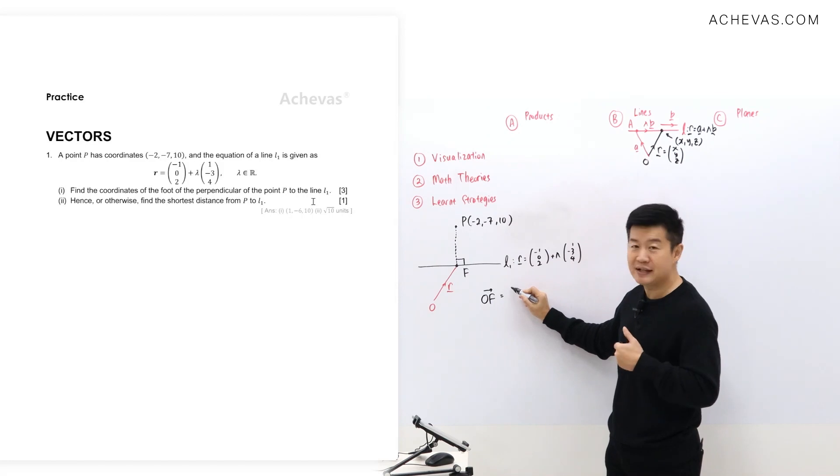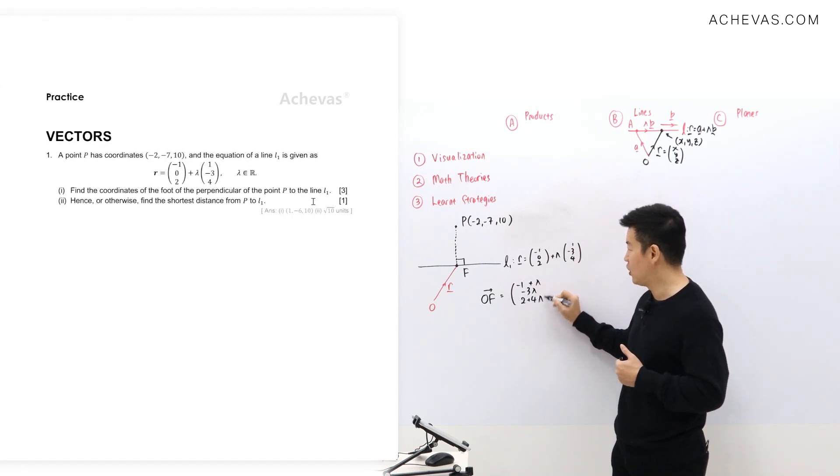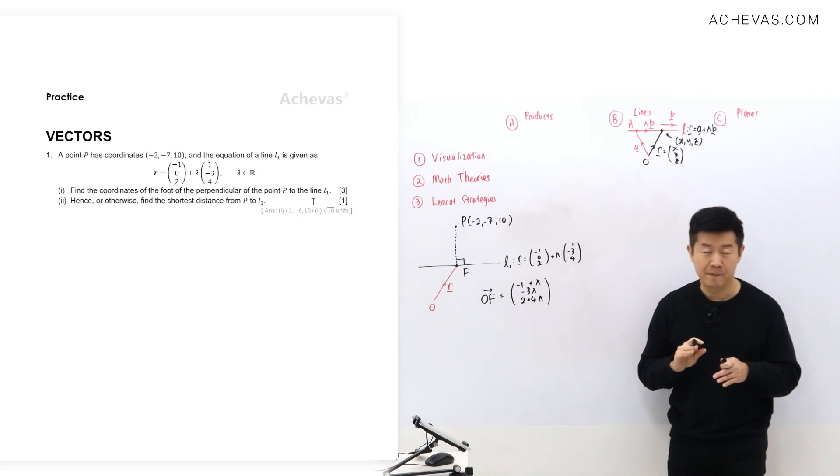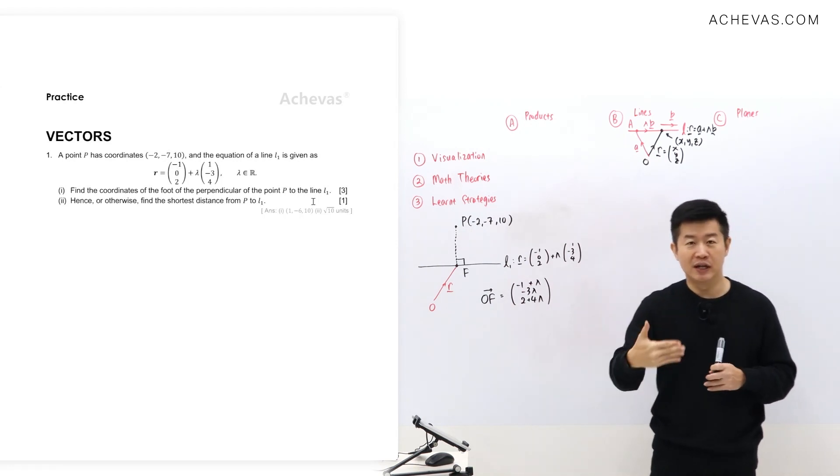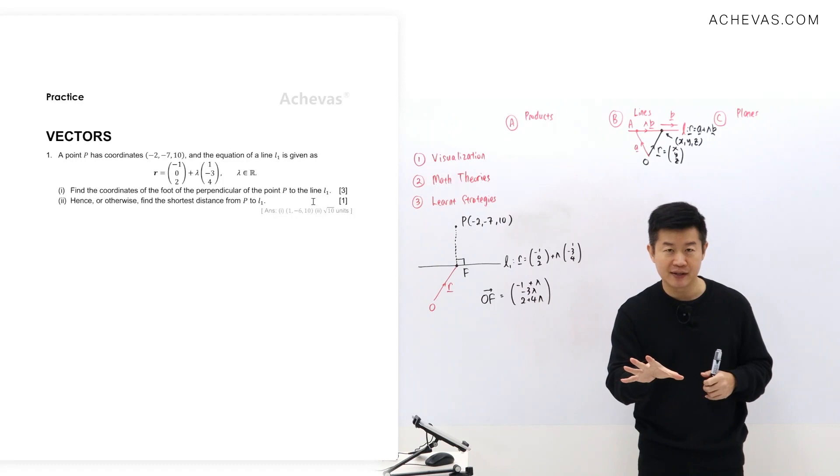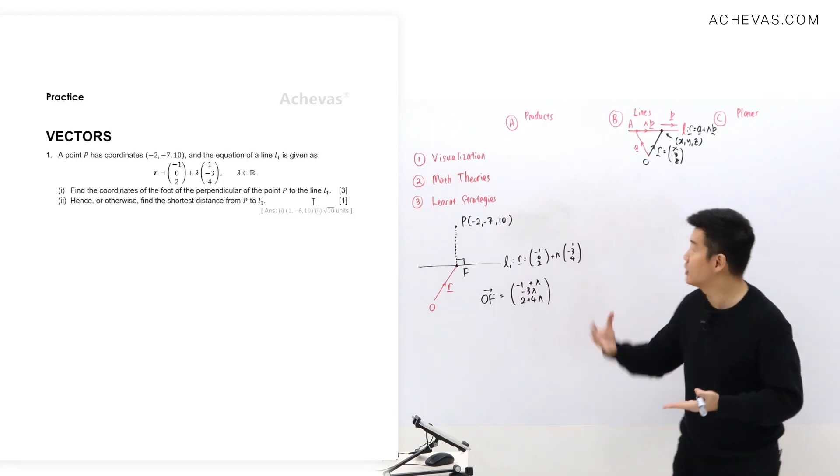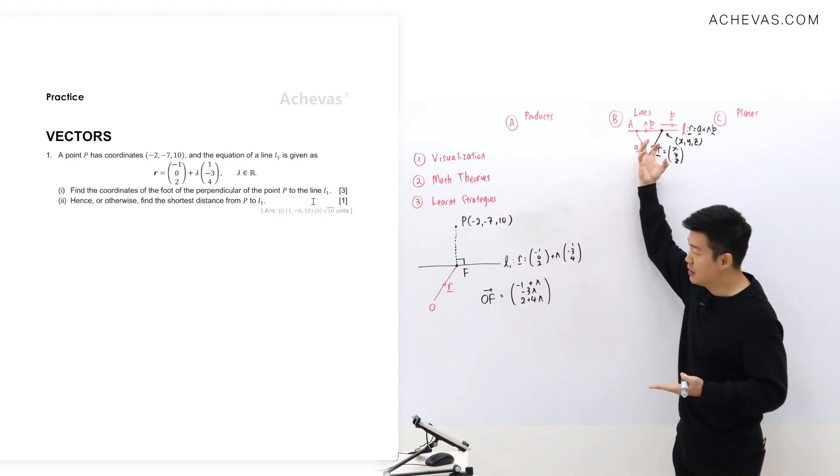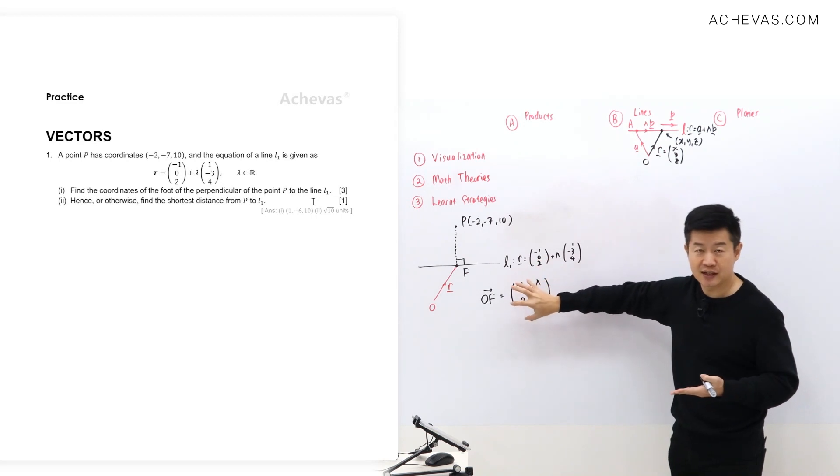So since F is a point that lies on the line L1, OF is going to take up a format of minus 1 plus lambda, minus 3 lambda, 2 plus 4 lambda. This is with a good understanding, not because I've memorized, but it is with a good understanding of how I am applying a theory to something that I've visualized. Any question?